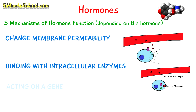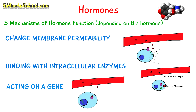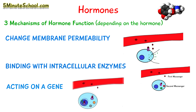The third mechanism is by acting on a gene, and this is how steroid and thyroid hormones work. They enter the cell, bind to a receptor forming the hormone receptor complex, and then the complex binds with DNA, which increases the transcription of mRNA. The mRNA moves out of the nucleus and goes to the ribosomes and activates them, resulting in the production of specific proteins — all initially caused by the hormone.